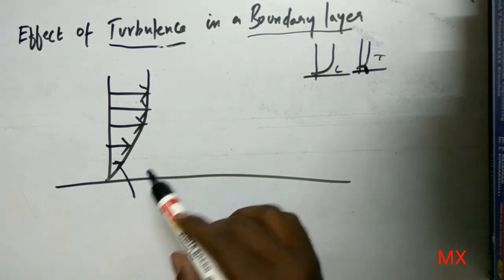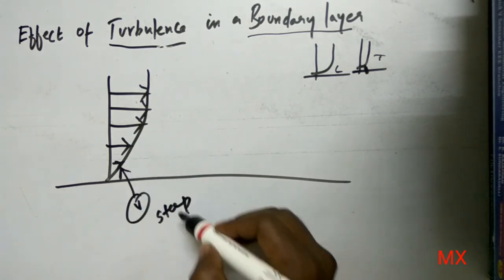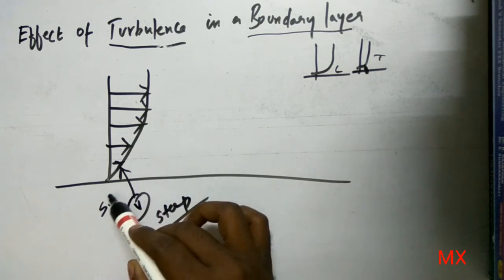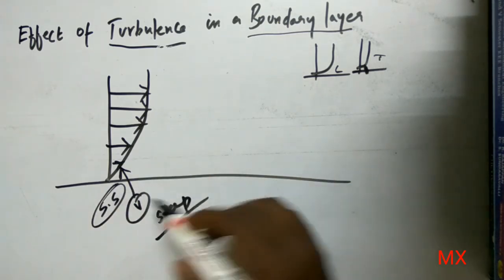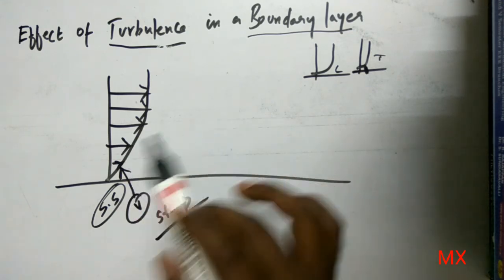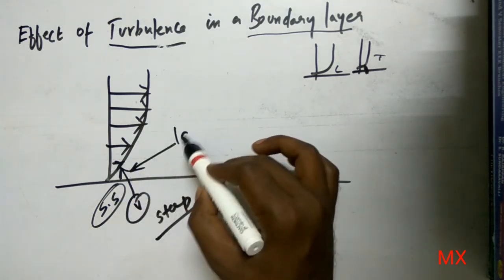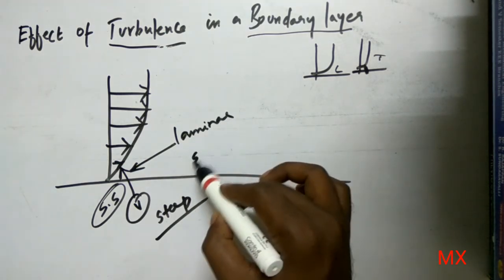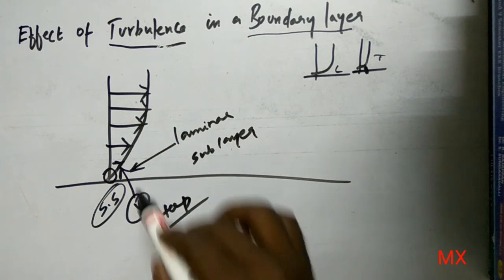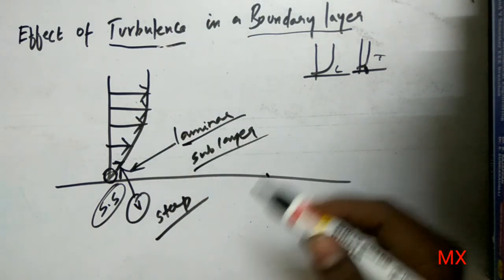In the turbulent boundary layer, the velocity gradient at the wall is very steep. If the velocity gradient is steep, the shear stress will be large — that is a key point. In the region very close to the wall, the flow is laminar; this very thin region right next to the wall is termed the laminar sub-layer. Apart from this, we are going to see our main concept: the increasing growth rate of the boundary layer.